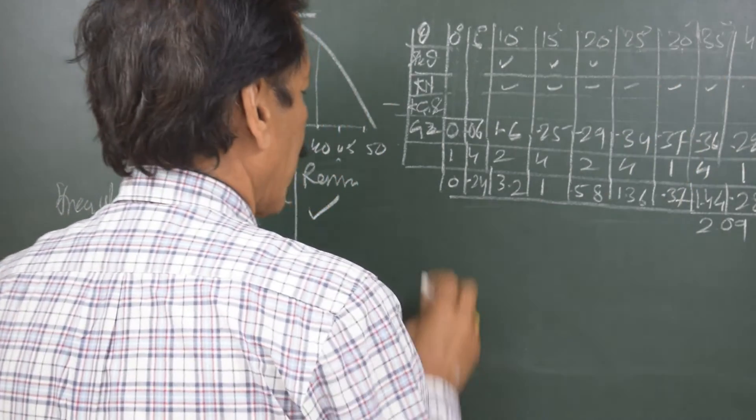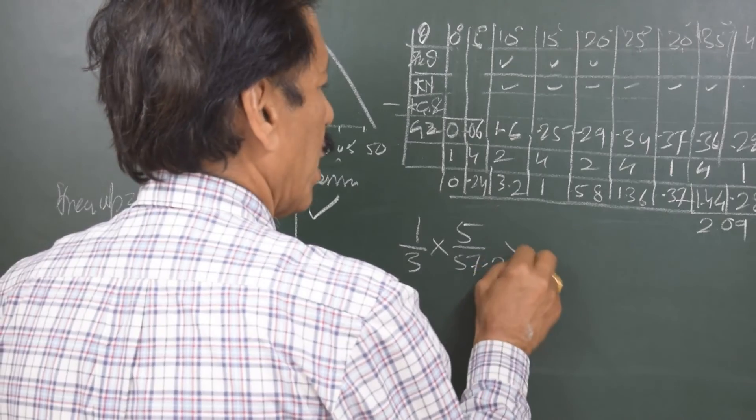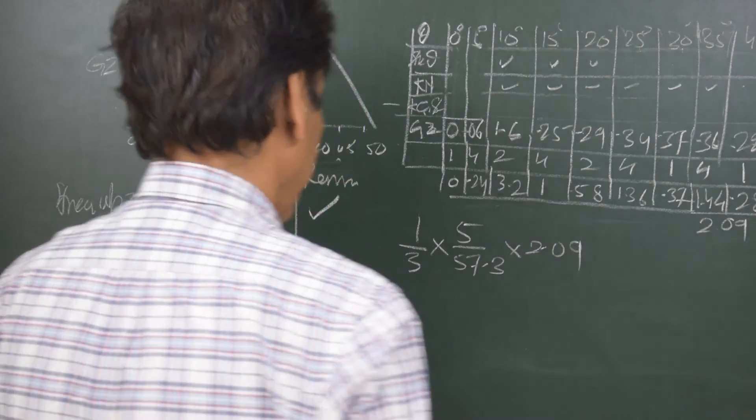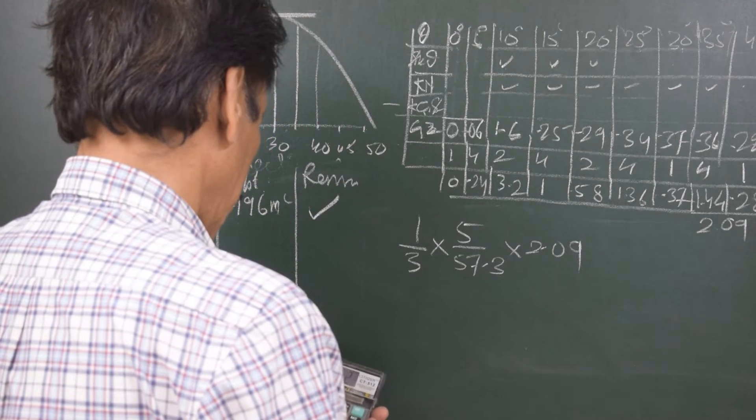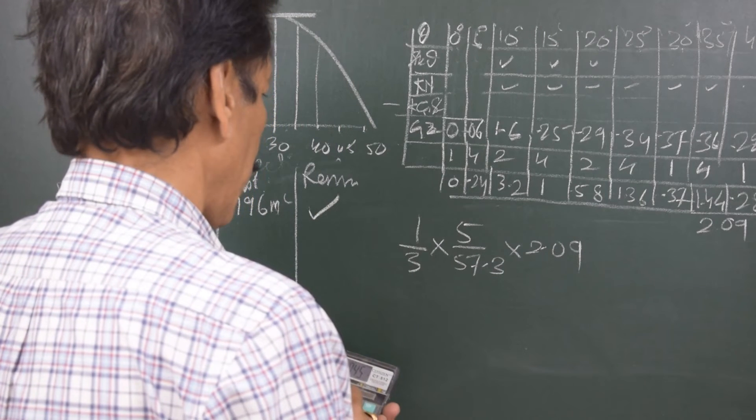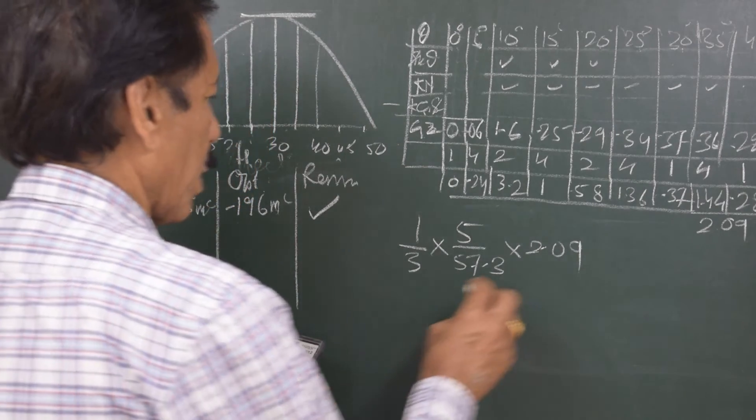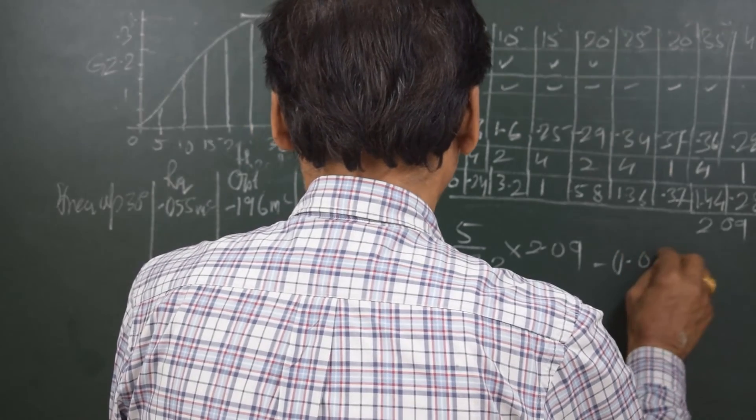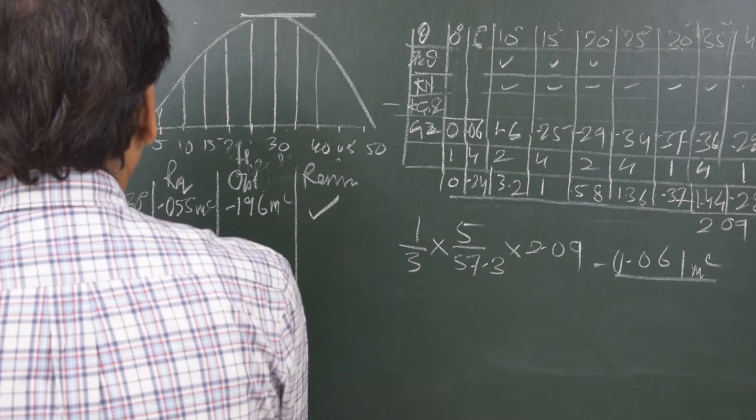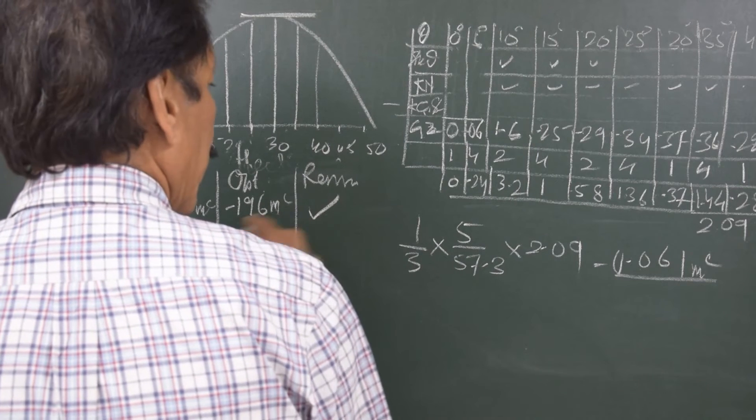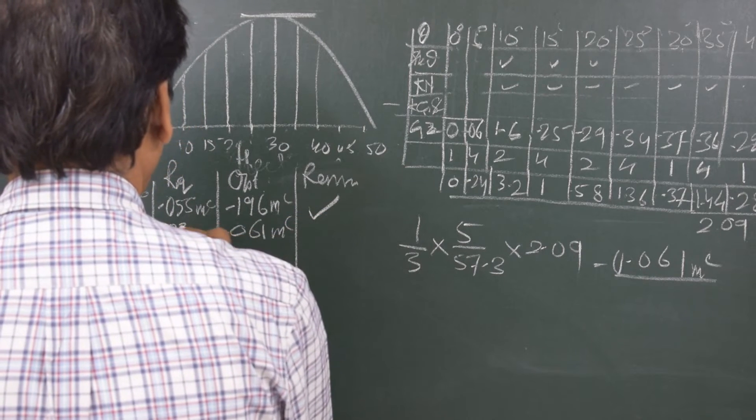Once again the separation is by 5 degrees so total area will be 1 upon 3 into 5 divided by 57.3. So that is 5 into 2.09 divided by 57.3 what I get is 0.061 meter radian. So area up to 40 degrees which is smaller of 40 and angle of flooding is 0.061 meter radian. And the requirement is 0.03 meter radian. So this criteria is also satisfied.